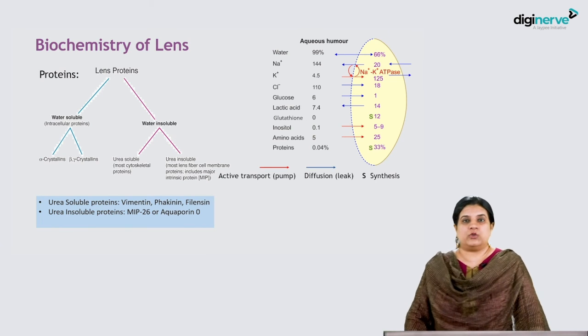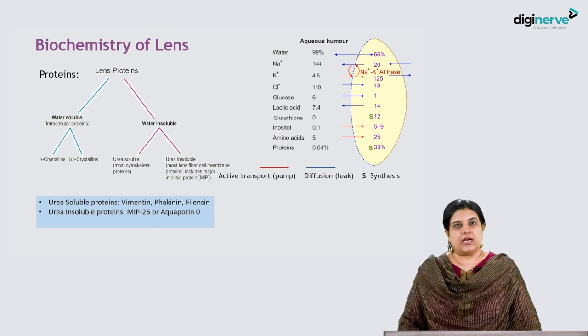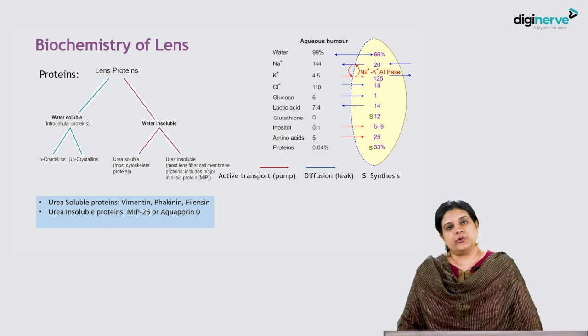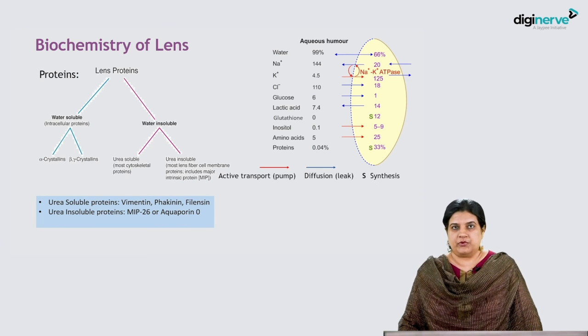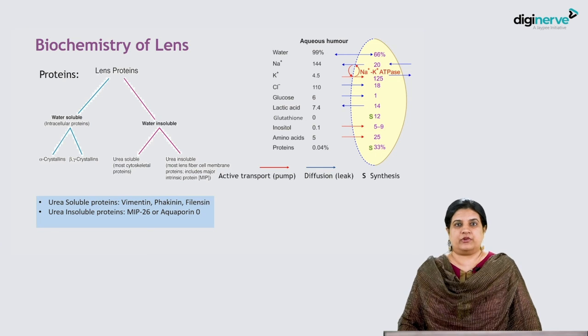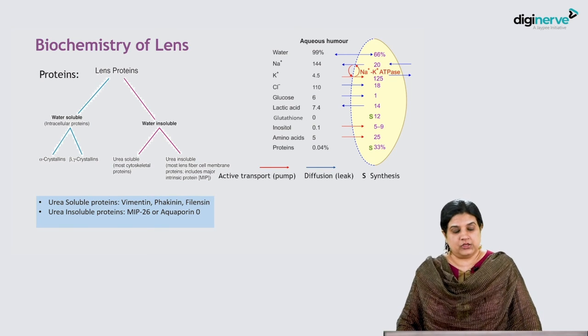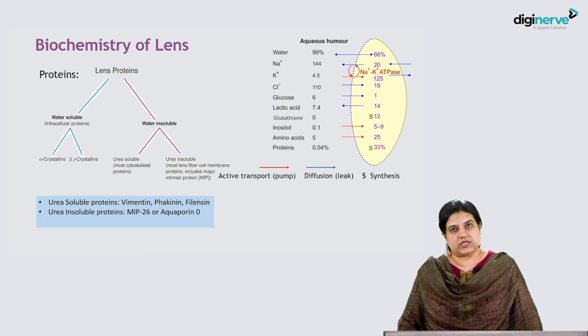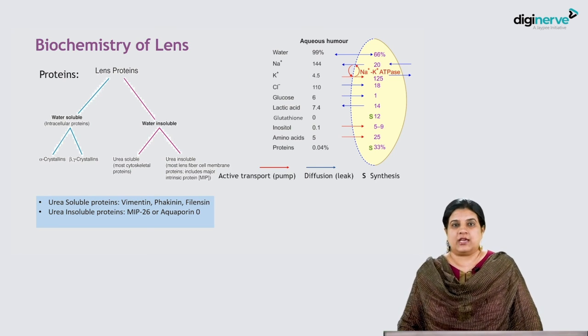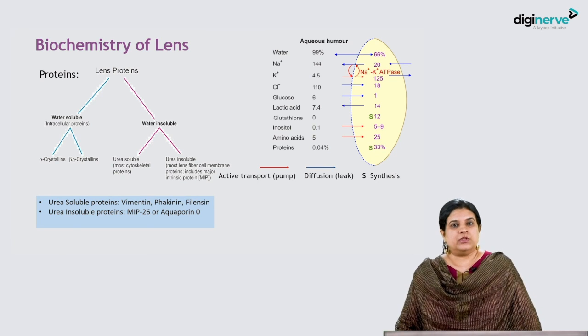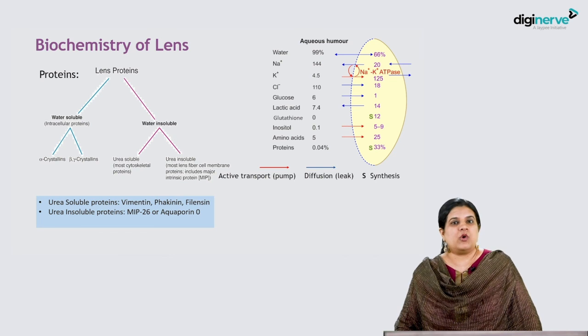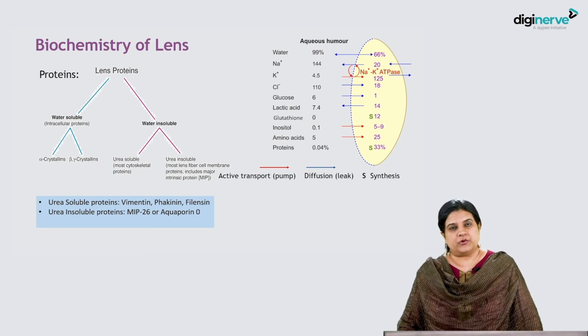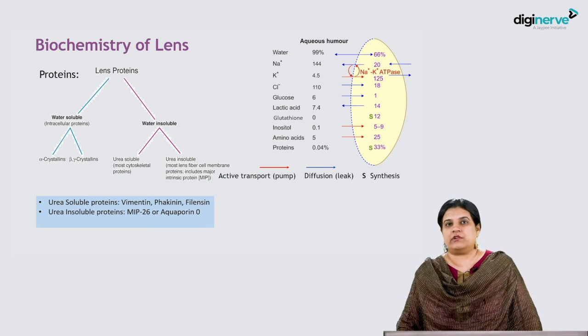Water insoluble proteins have two forms: urea soluble and urea insoluble. Urea soluble proteins contribute to cytoskeletal proteins and structural anatomy, including vimentin, phakinin, and filensin. Urea insoluble proteins include MIP-26, or major intrinsic protein 26, also known as aquaporin 0. This protein is contributory toward keeping water out of the lens and giving it a transparent appearance.